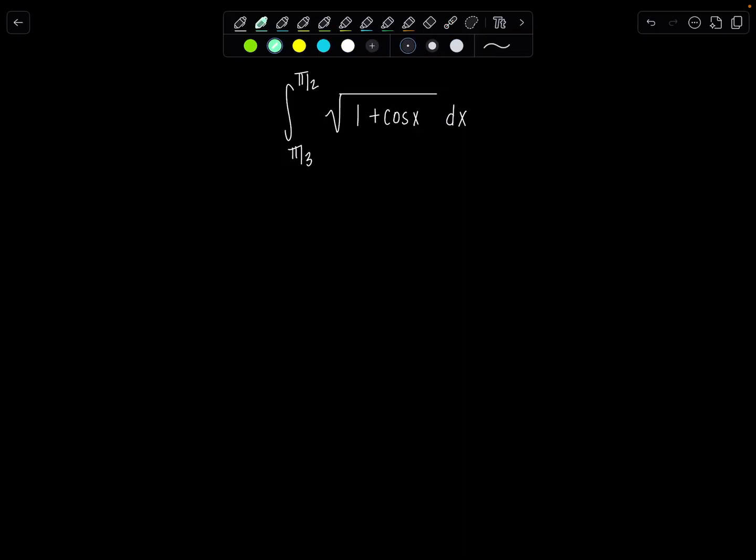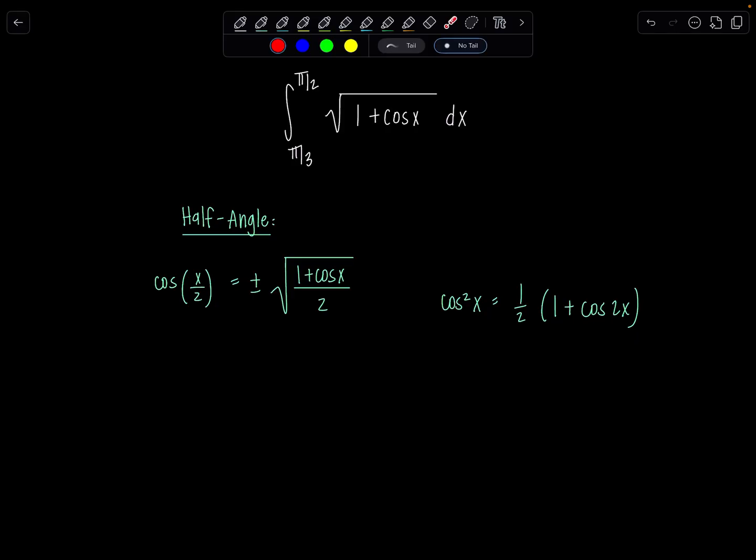When you're in trig and pre-calc, they probably taught you the half angles look like cos(x/2) = ±√((1 + cos x)/2). And now in Calc I'm telling you, you're going to use cos²(x) = (1/2)(1 + cos 2x). I'm calling it the half-angle still and you might be thinking, what in the world is going on? Some texts might call it something else. It doesn't matter. It's the same identity, just rearranged.